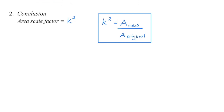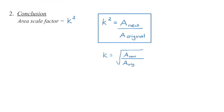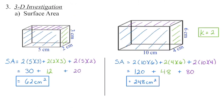Once we know the area scale factor, we can also get the linear scale factor. How do you get rid of a squared? We know that we square root it. So once I know the area scale factor, I can also get the linear scale factor by square rooting that value.